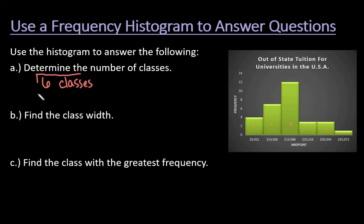The class width is the difference between one class to the next class. When you're finding class width, you can either do it by using the difference between consecutive lower limits, or consecutive upper limits, or midpoints.